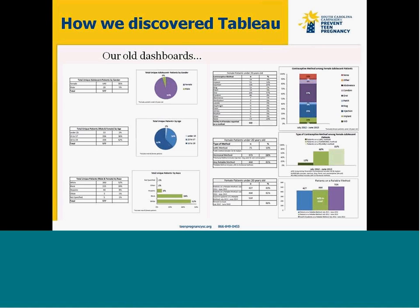The graph under it has our caseload data broken out by age — we have under 15 in a light blue sliver, 15 to 17 in medium blue, and 18 to 19 year olds in darker blue. And at the bottom is the caseload broken out by race. Our main focus in this dashboard is actually on the right side — you can see the contraceptive continuum with the different colors. We have the least effective methods at the top and the more reliable methods at the bottom. Our goal is to move patients down this spectrum.